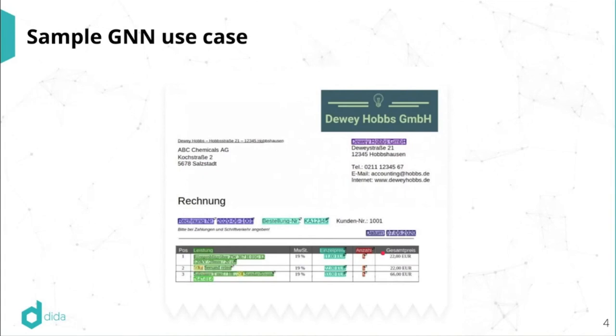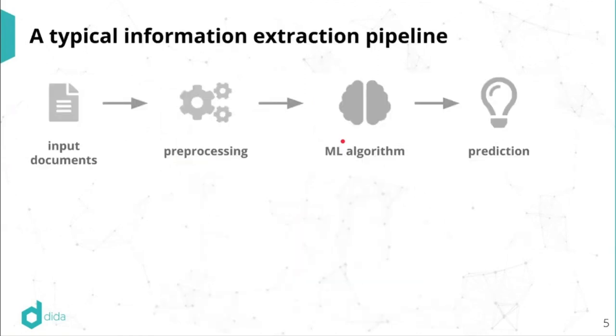So a standard language model, which only looks at the text sequentially, for such a model, maybe this quantity two here would come completely out of the blue, because it follows some information that is not really related to quantities. So we would like to have a model which is able to get this broader view of the data.